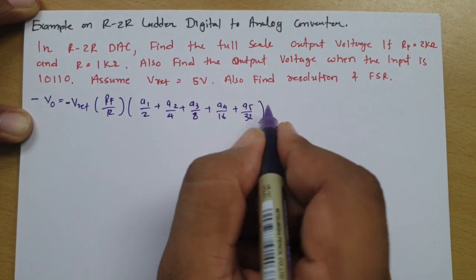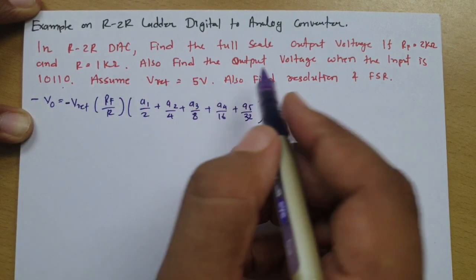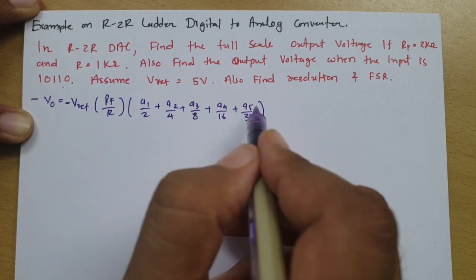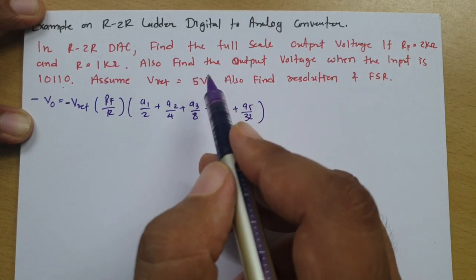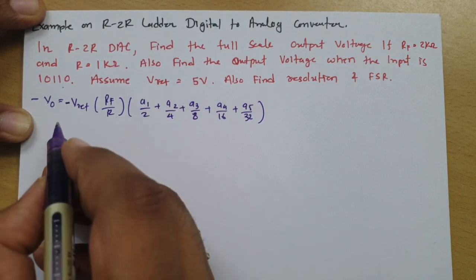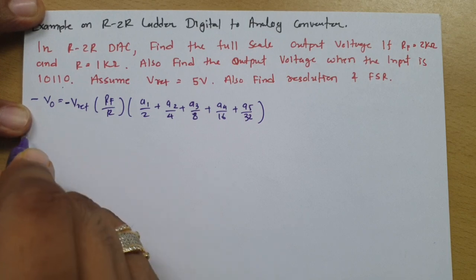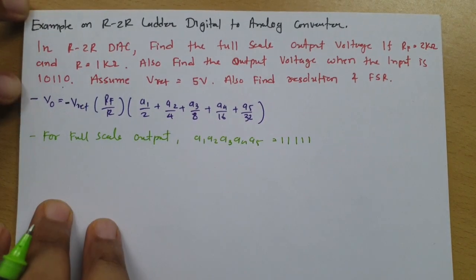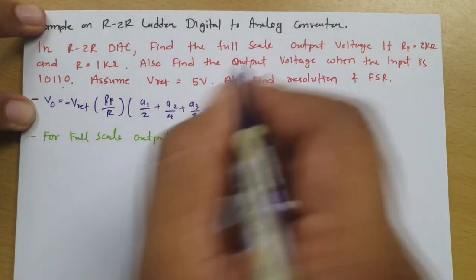I am writing it from A1 to A5 because it is 5-bit data given in the question. For that I have placed A1, A2, A3, A4, A5. Now first we need to identify the full scale range. We can calculate full scale range when A1, A2, A3, A4, A5 are all equals to 1. So for full scale range, if we place those values in the equation, we will get the full scale output voltage.